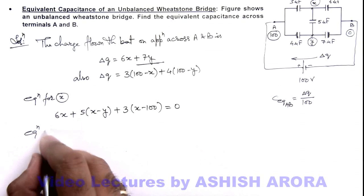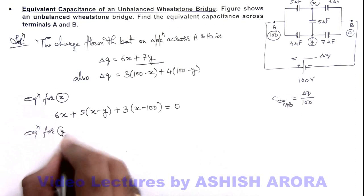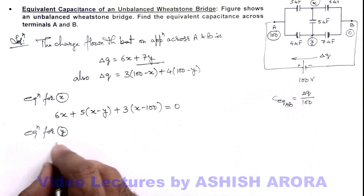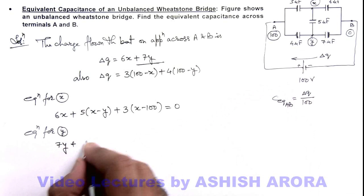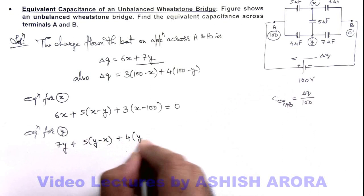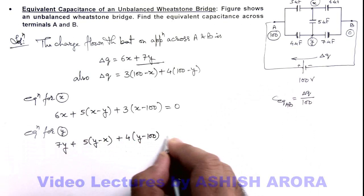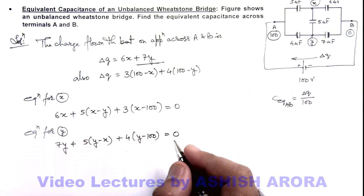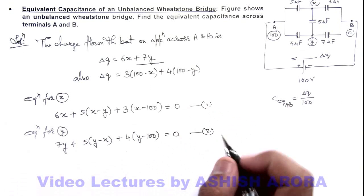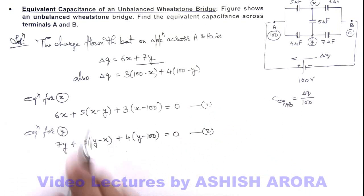Similarly I can write the equation for y, and this is again sum of these three charges, so this is 7y plus 5 multiplied by y minus x, plus 4 multiplied by y minus hundred is equal to zero. So if this is taken as equation 1 this as equation 2, you can see these two are the linear equations in two variables, so I leave it as an exercise for you to solve this equation and get the value of x and y.